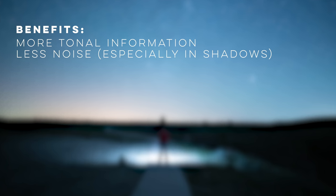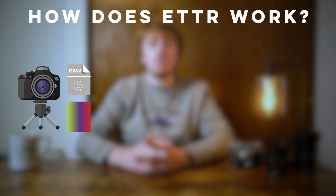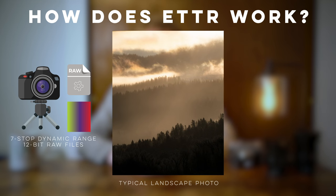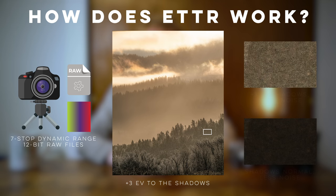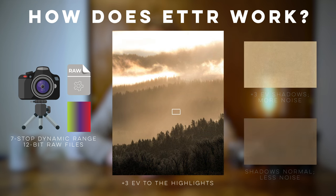But why does this work? How can simply slightly overexposing an image improve image quality? If I raise the shadows in a landscape shot, you can clearly see banding and noise caused by a lack of color fidelity. This type of degradation is typical when aggressively lifting dark areas of an image, but not when adjusting highlight levels.